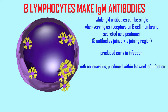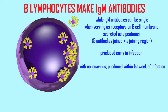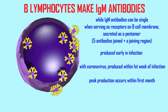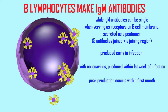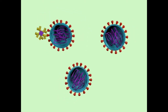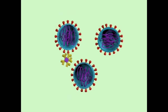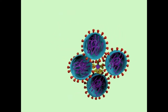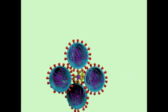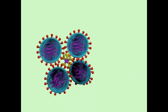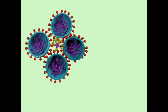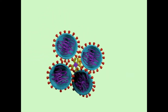Because IgM antibodies can be secreted in a group of five — a pentamer with a joining region connecting them — they have a great ability to agglutinate: to bind multiple coronavirus particles and attach them together so that they are no longer independent of each other. They are no longer as mobile as they previously were, which helps to sequester them and limit their virulence.